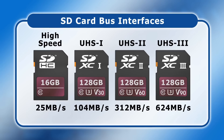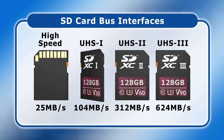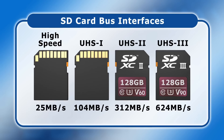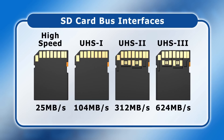SD cards with either a High Speed or UHS-1 bus interface communicate data over one row of pins. However, to achieve higher data transfer speeds, UHS-2 and UHS-3 cards require a second row of connectors. This makes it very easy to distinguish cards with a slower or faster bus interface just by turning them over. In practice today, if an SD card has two rows of pins, it has a UHS-2 bus interface.